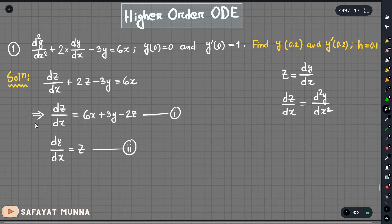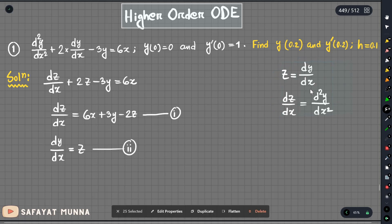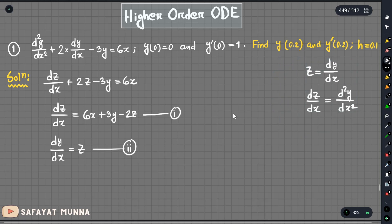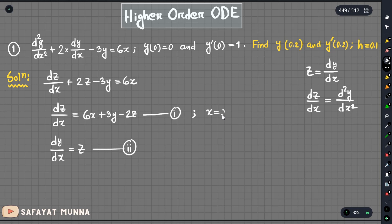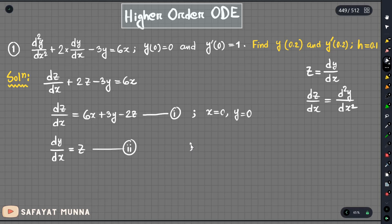This is the problem we have to solve in this video. We need to sort out the initial conditions. The initial condition at x equals 0: y value at 0 is 0, and z value at x equals 0 is also noted. This is a first-order linear differential equation system with two variables.